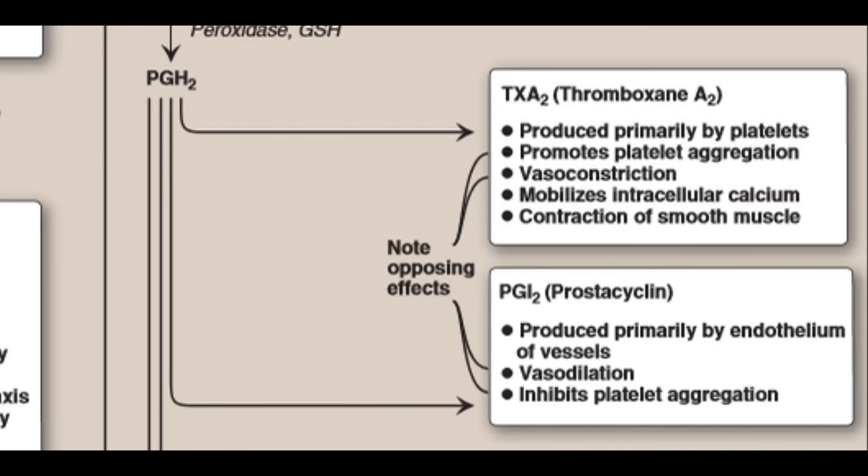Thromboxane A2 (TXA2) is produced by COX-1 in activated platelets. It promotes adherence and aggregation of circulating platelets and contraction of vascular smooth muscle, thus promoting formation of blood clots.